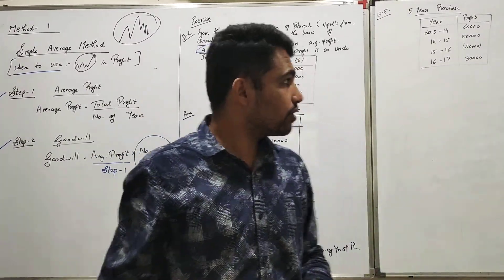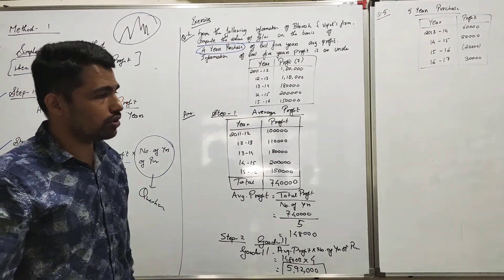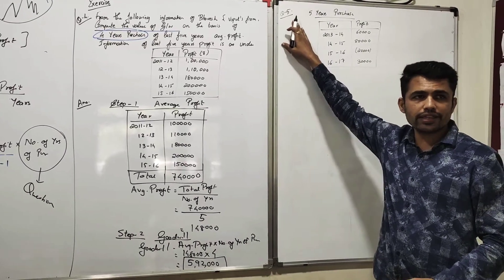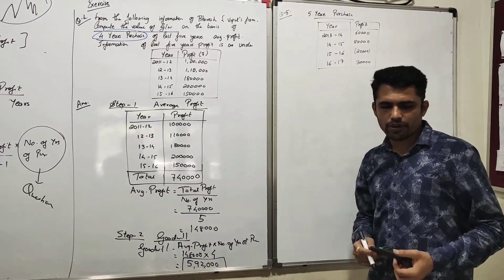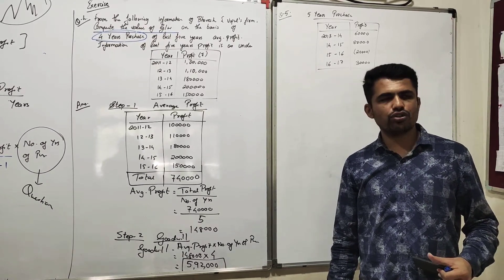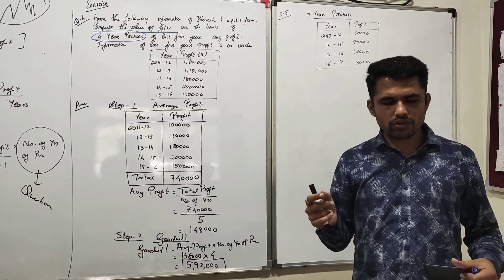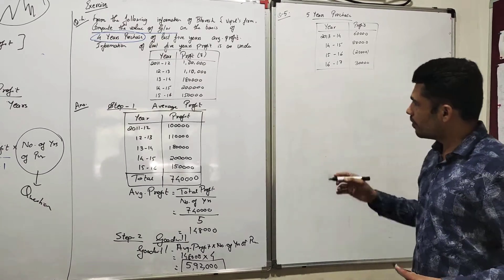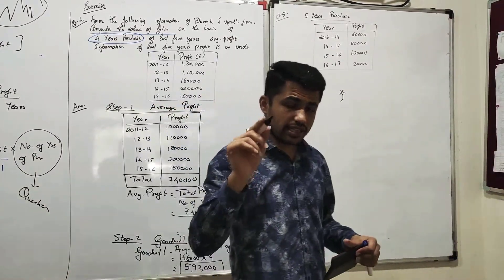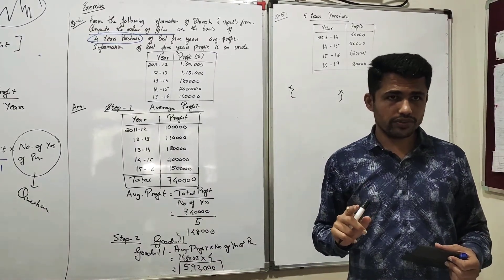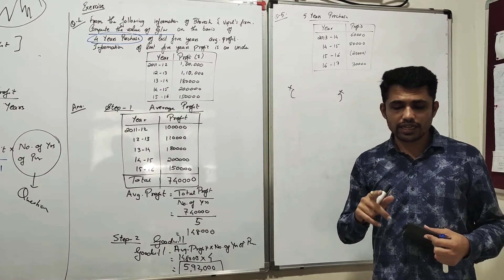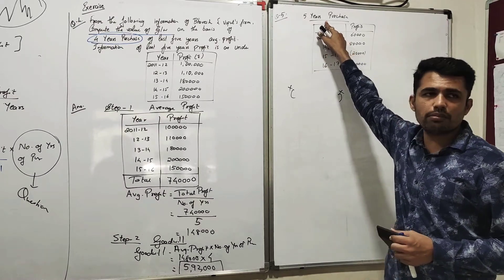I hope you are clear with this solution. Now moving to the next question — Question Number Five. Mahendra and Praveen are partners of a firm sharing profit and loss in the ratio of 3:2. They wanted to change their profit sharing ratio to 1:1 — this information is irrelevant. Therefore they decided to make the valuation of goodwill. As per the partnership agreement, the value of goodwill is to be determined on the basis of five years purchase.